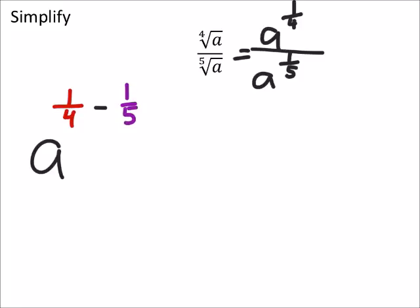So, once again, common denominators of 20. I'll multiply the four and the one by five, and the one by four here.